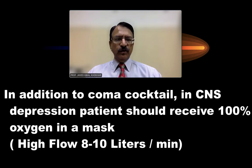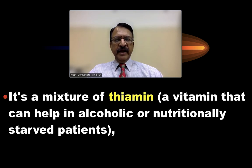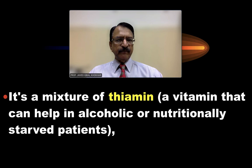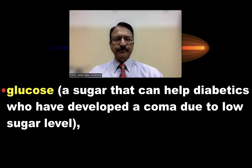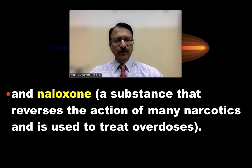In addition to the coma cocktail, CNS depression patients should also receive 100% oxygen via mask at a high flow rate of 8 to 10 liters per minute. The thiamine component helps in alcoholics or nutritionally starved patients, glucose helps in diabetics when sugar level is low, and naloxone is used to treat overdose of narcotics.